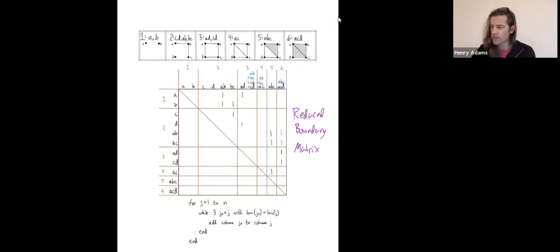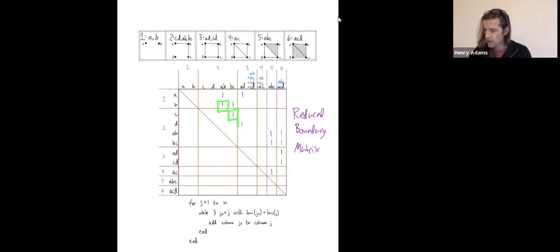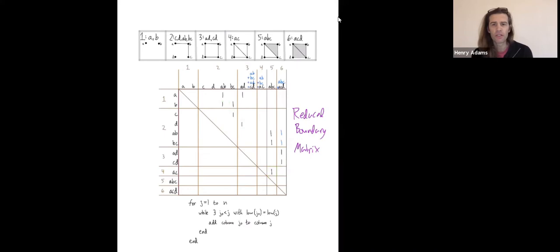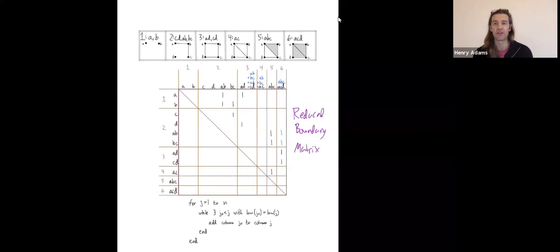From this reduced boundary matrix we can read off the persistent homology. It's reduced because each lowest one in any column is in its own unique row. Those lowest ones in unique rows are called the pivots. Here are the pivots of this reduced boundary matrix, and it's these pivots that determine the pairing giving persistent homology. When reducing the boundary matrix, you're changing basis on the group of chains — finding a convenient basis to represent cycles and boundaries in the language of homology.